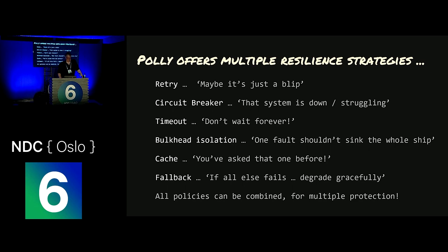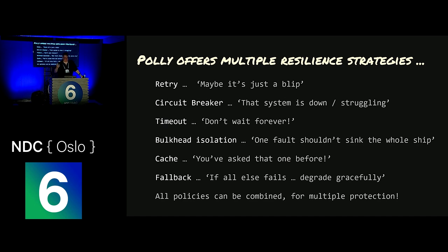These are the resilient strategies. You've got retry — maybe it's just a blip and it'll work itself out. A circuit breaker helps with that chocolate-wrapping strategy: the system is struggling, so we stop making calls to it on our side so it can recover. Timeout — simply don't wait forever. Bulkhead isolation is a way to apportion resources so that one struggling service doesn't take down all the other services. And fallback is a way to fail gracefully with an exception message that makes sense. You can combine these and wrap them inside each other.